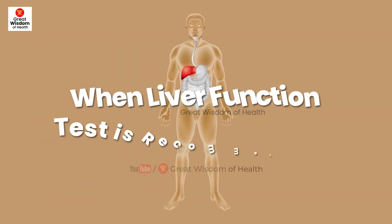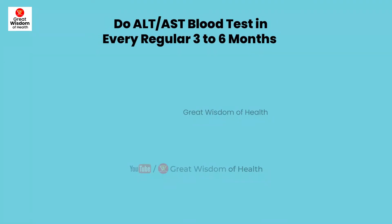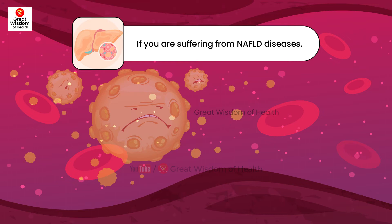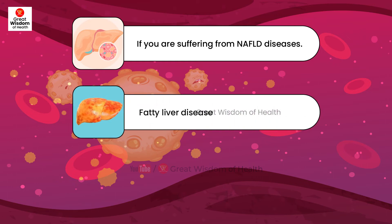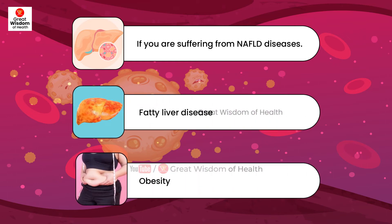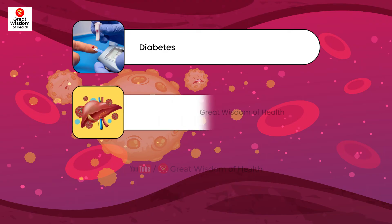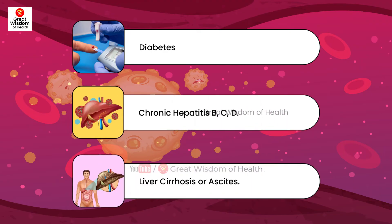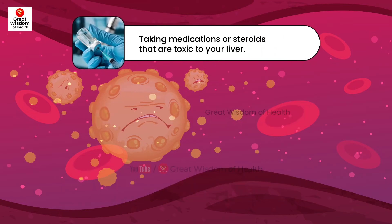When a liver function test is recommended: The patient needs to do an ALT or AST blood test every 3 to 6 months regularly, or depending on the patient's condition as per the doctor's suggestion. This applies if you are suffering from NAFLD, fatty liver disease, obesity, diabetes, chronic hepatitis B, C, or D, liver cirrhosis or ascites, or if you are taking medications or steroids that are toxic to your liver.